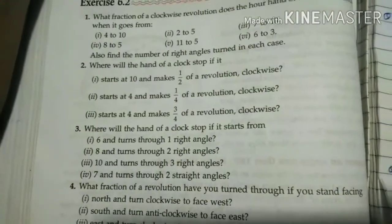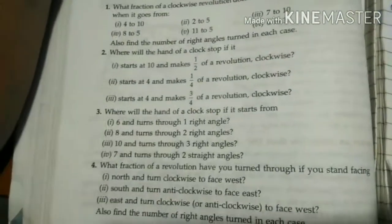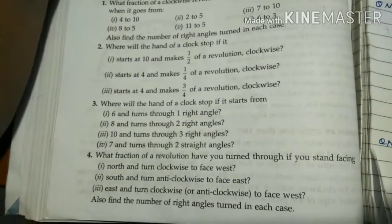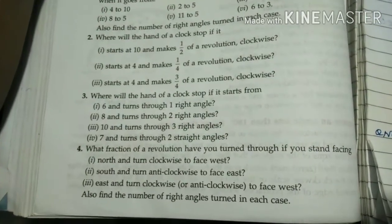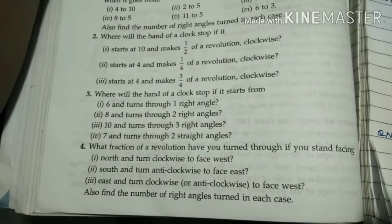Second part: starts at 4 and makes one-quarter revolution. Quarter means 3 points. 4 plus 3 equals 7 o'clock. Third: starts at 9, do it yourself. Try to solve now.